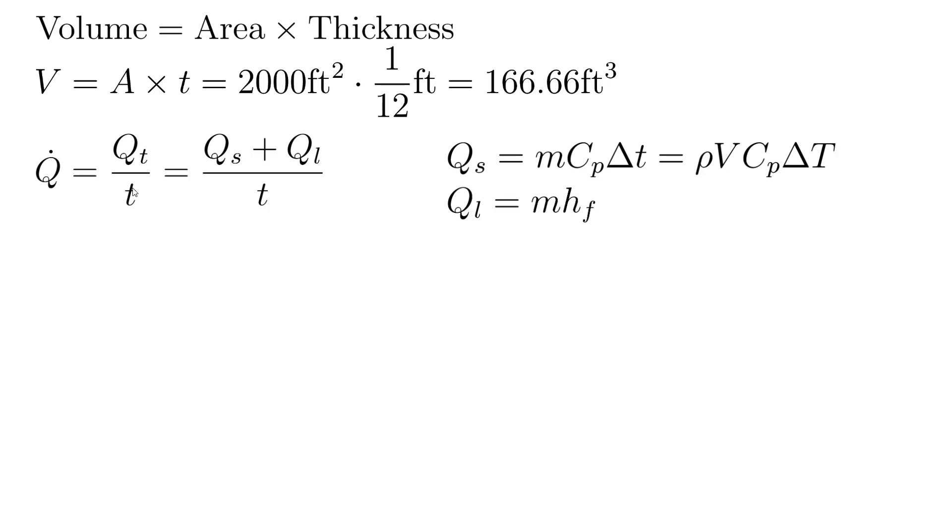And now for the latent, it's just going to be mass times the latent heat of fusion, which we can look up. And again, we don't know the mass, but we can find out by doing density times volume, just as we did above.